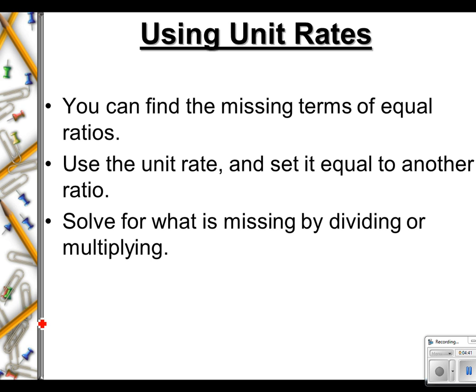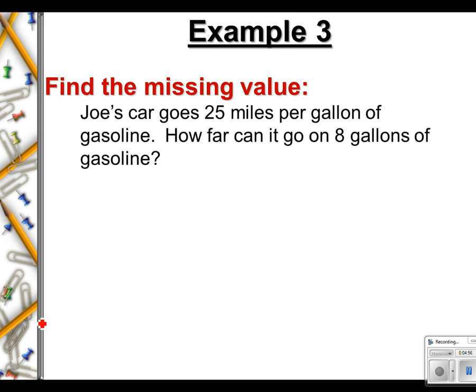Using your unit rates. Right here is where you're going to find the missing terms. Sometimes you're going to be missing a term. You're going to use the unit rate to set it equal to another one. And third, you're going to solve for what is missing by dividing or multiplying. Okay, now this is an example right here. Example three. Joe's car goes 25 miles per gallon of gasoline. How far can Joe's car go on eight gallons of gasoline? And in this example, we're given the unit rate. The unit rate is 25 miles per gallon. Okay, so that's not really the question. The question is how far can his car go on eight gallons of gas.